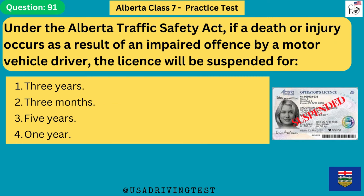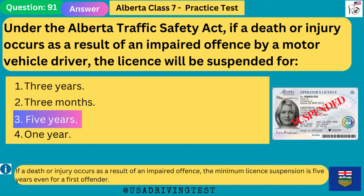Under the Alberta Traffic Safety Act, if a death or injury occurs as a result of an impaired offense by a motor vehicle driver, the license will be suspended for: 1. 3 years. 2. 3 months. 3. 5 years. 4. 1 year. The answer is 3: 5 years. If a death or injury occurs as a result of an impaired offense, the minimum license suspension is 5 years even for a first offender.